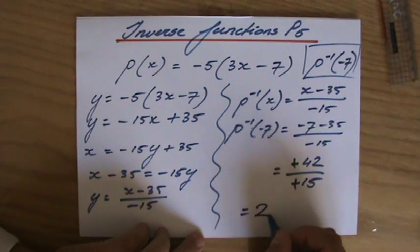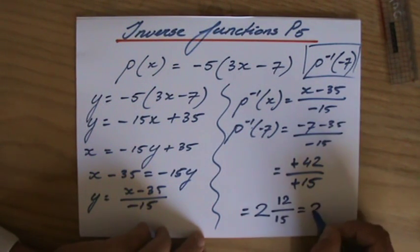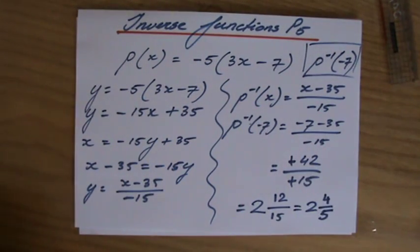So it's going to fit in twice, which is 30. My remainder then is 12 over 15. I see a common factor of 3, so it's 2 and 4/5.